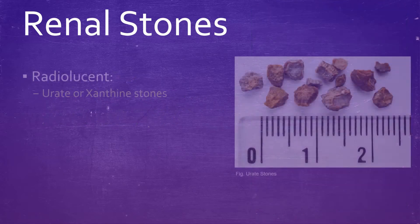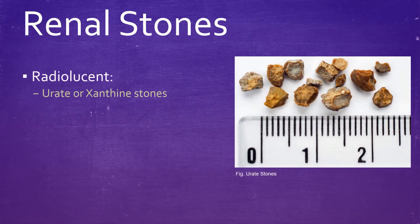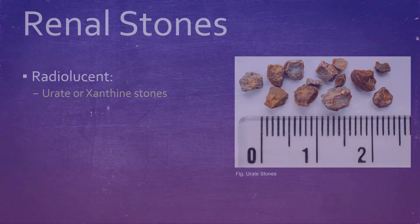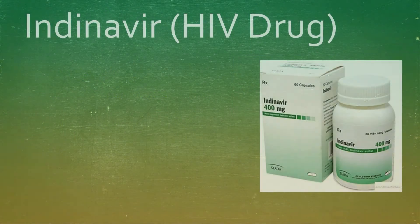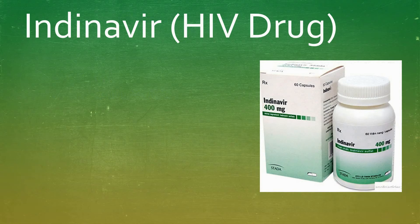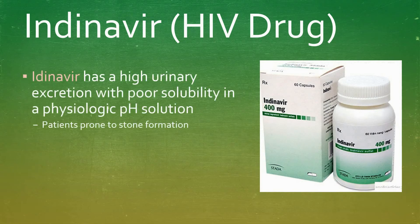Radiolucent stones, on the other hand, consist of urate or xanthine stones. Indinavir is a HIV drug with high urinary excretion and poor solubility at certain pH, which leads it to forming stones.